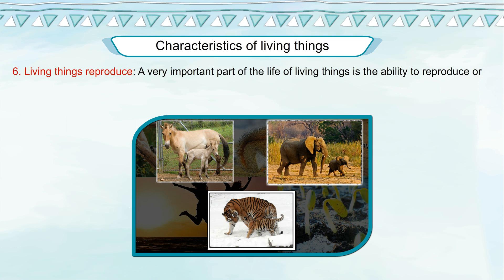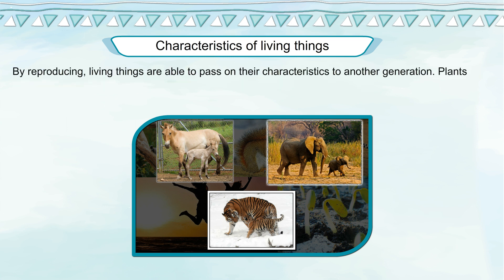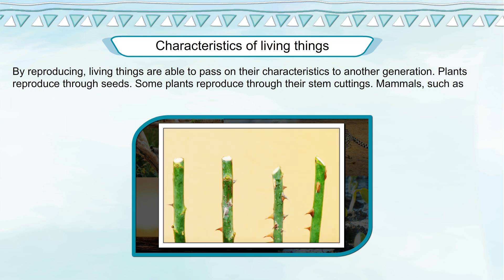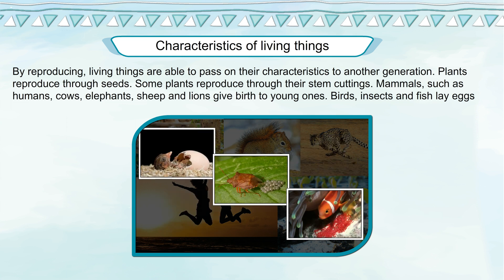Living Things Reproduce: A very important part of the life of living things is the ability to reproduce, or produce young ones of their own kind. This process is known as reproduction. By reproducing, living things are able to pass on their characteristics to another generation. Plants reproduce through seeds; some plants reproduce through stem cuttings. Mammals such as humans, cows, elephants, sheep and lions give birth to young ones. Birds, insects and fish lay eggs from which babies hatch.